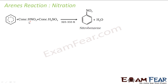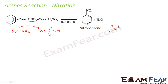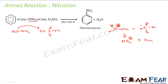Let us see the reaction mechanism. I have nitric acid, HNO3, and I have sulfuric acid, H2SO4. They will react, forming a water molecule plus NO2, and this will form a negative charge. This water molecule will go off, and with this I will get NO2+ and a water molecule.